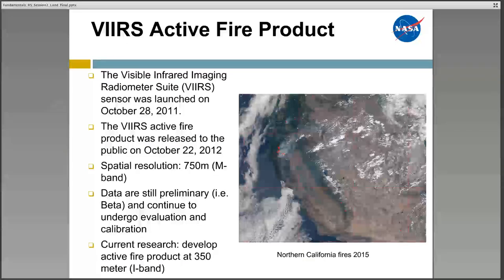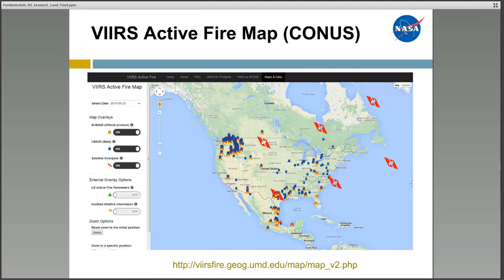A relatively new product is the VIIRS active fire product. It provides near real-time active fire locations at 700 meters (M-band) with a beta version of a 350-meter (I-band) product. This product is developed using an algorithm that detects thermal hotspots on a daily basis. The VIIRS data are searchable on a user-friendly mapping interface and available for download as a GeoTIFF, ASCII, or KMZ file. You can access and visualize these data at the website listed here.